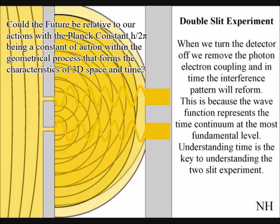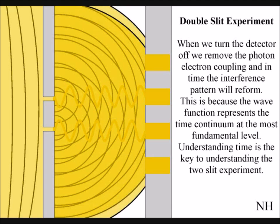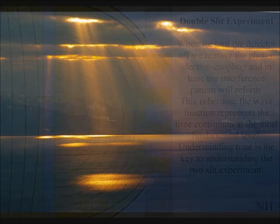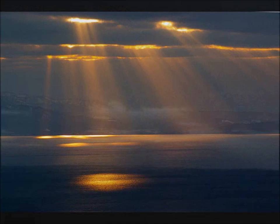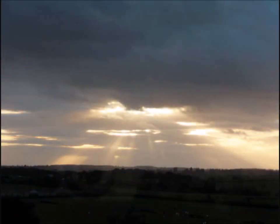In this theory, we have a universal interactive process. The same interference pattern can be seen when sunlight breaks through clouds, forming rays of sunlight.